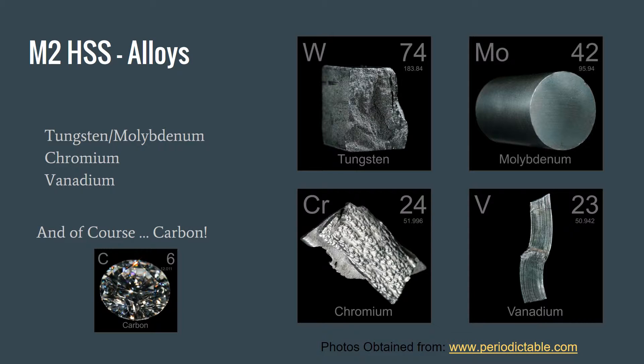Vanadium, another alloy in M2 high speed steel, reduces slag and increases cutting efficiency. And of course, since we're dealing with steel, we have carbon. The amount of carbon alloyed within high speed steel creates a balance between hardness and wear resistance.